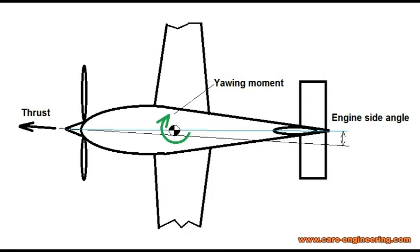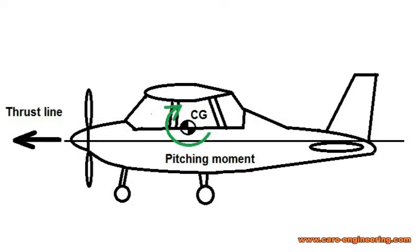There may also be a benefit to tilting the engine around the y-axis to reduce pitching moment changes with power changes. This depends on how far away the thrust line is from the center of gravity. If the CG of the airplane, when fully loaded, is above the thrust line — as can be the case for high-wing airplanes — applying power will cause the airplane to pitch up. This is bad news in slow flight.